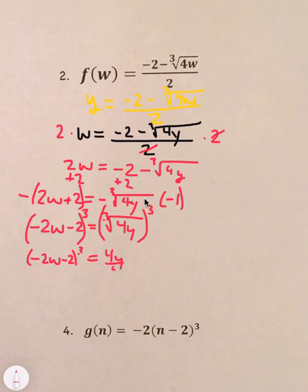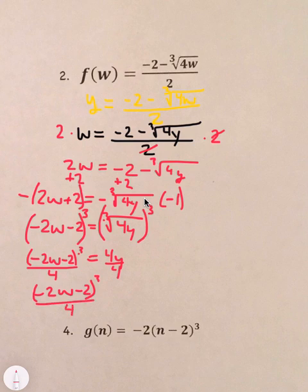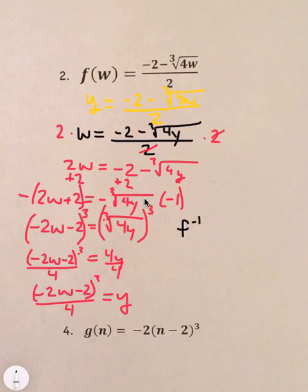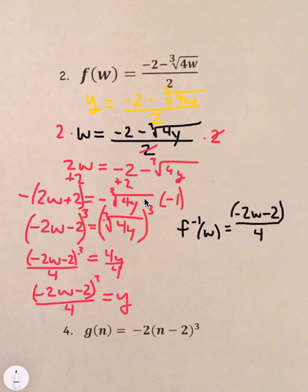And of course we have to divide by the 4 so we have negative 2w minus 2 cubed over 4 equals y. And then there's still one more step. We have to change the y to f inverse of w. We have to write it as an inverse function. All of that. So, there is our final answer.